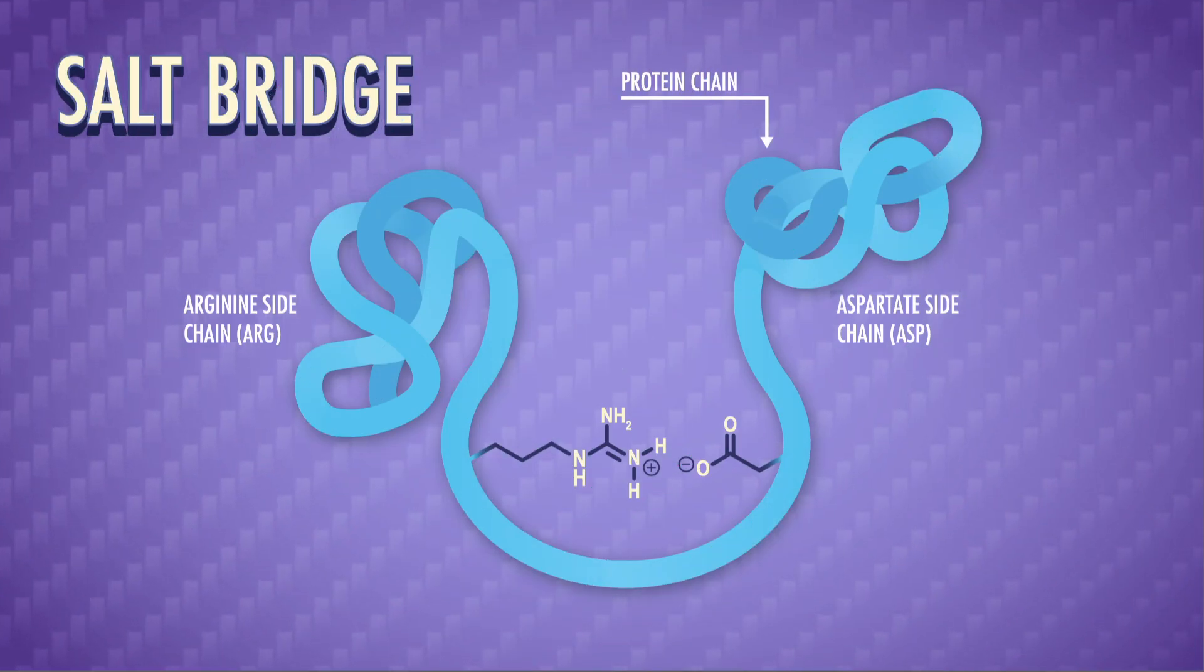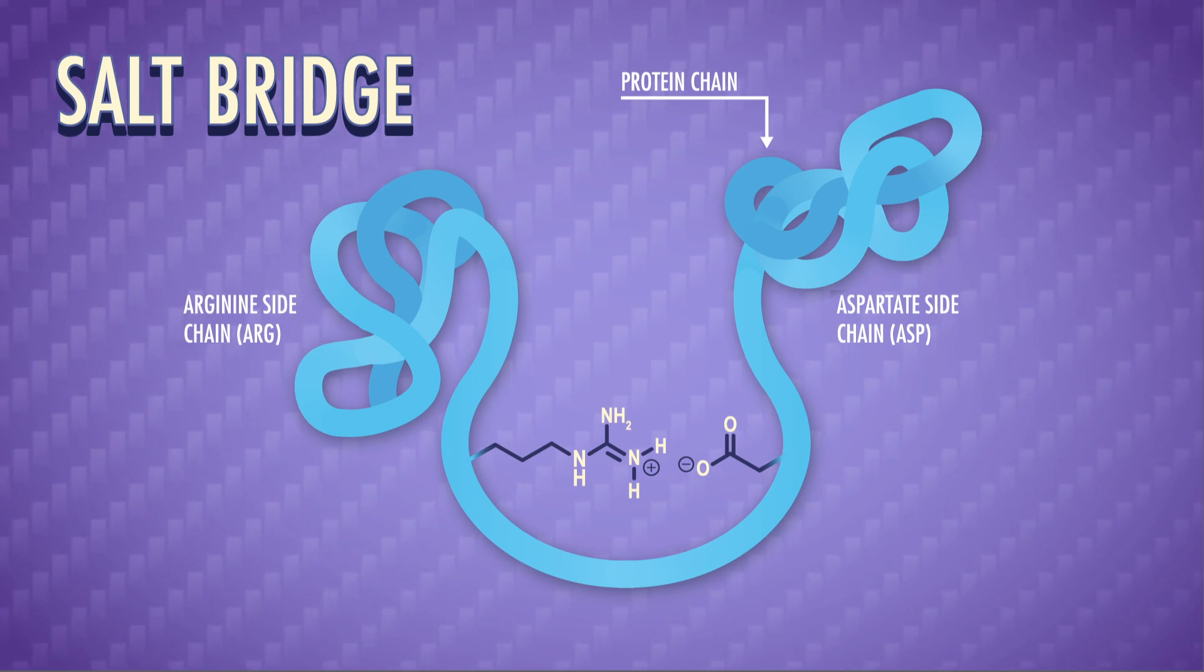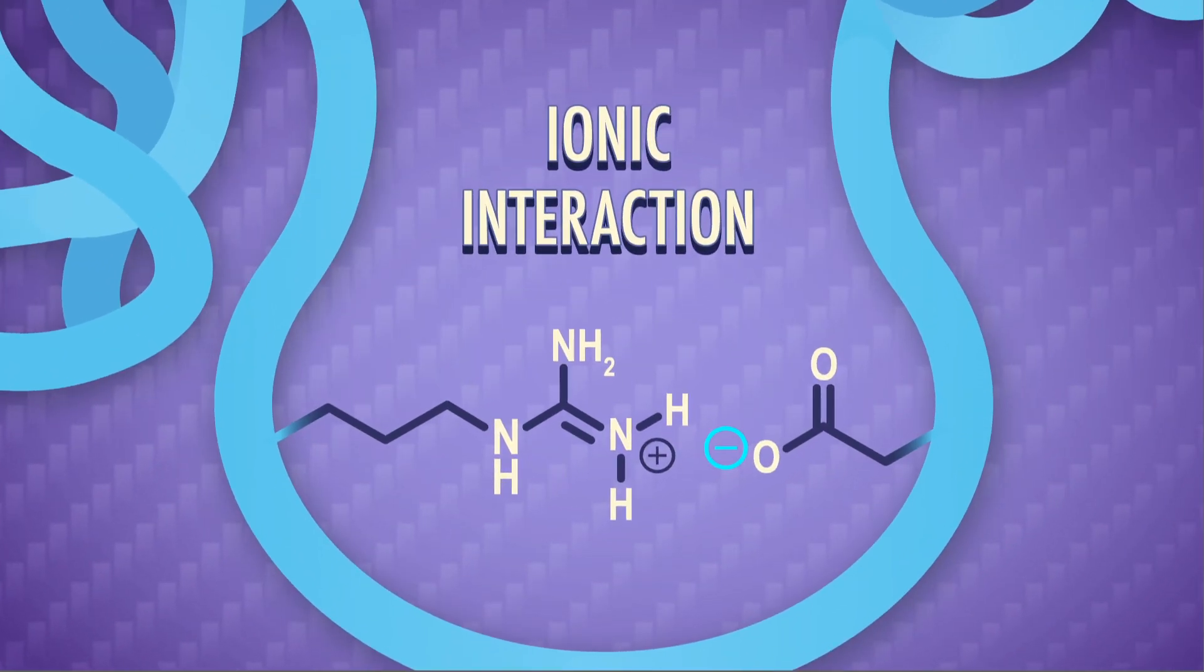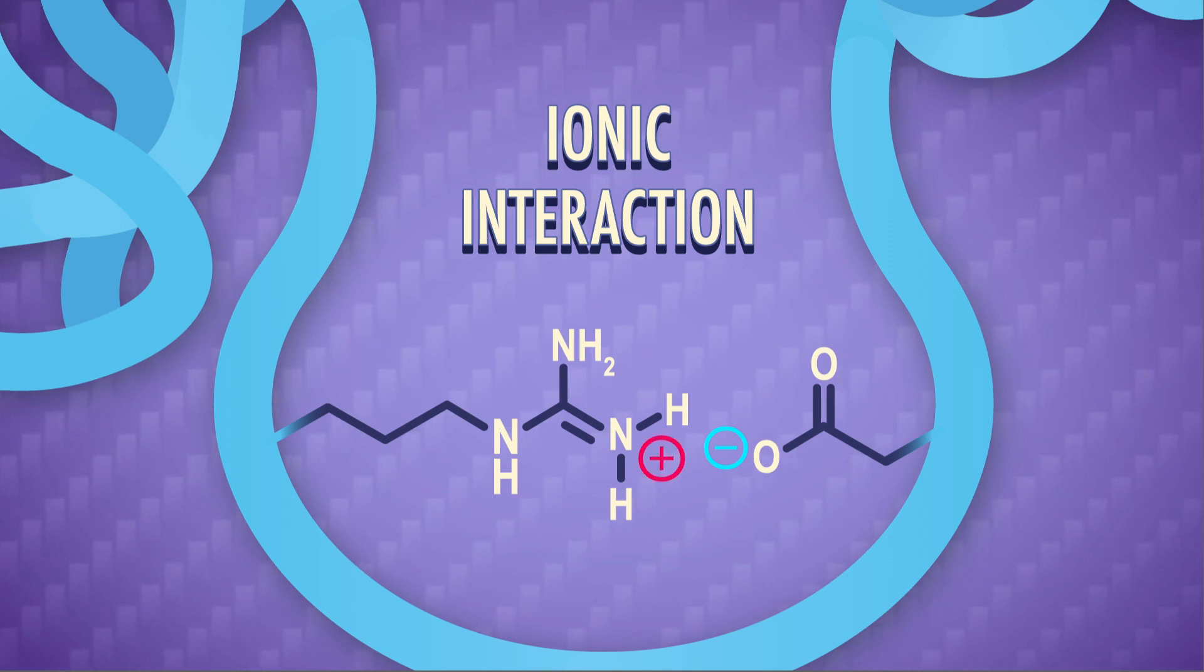Getting stronger, our third interaction involves full charges. Two ionized side chains can form an ionic interaction or salt bridge. For example, the negatively charged carboxylate side chain of aspartate can ionically interact with the positively charged arginine side chain.